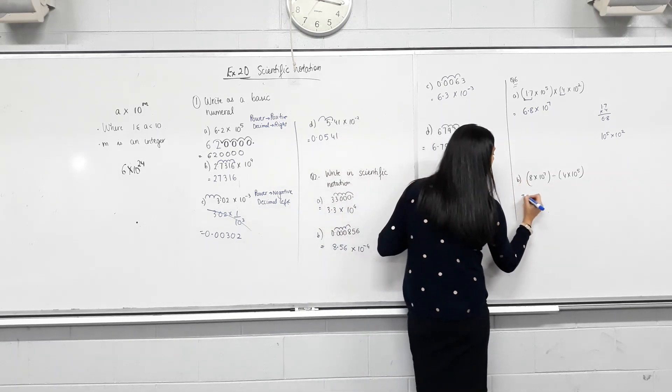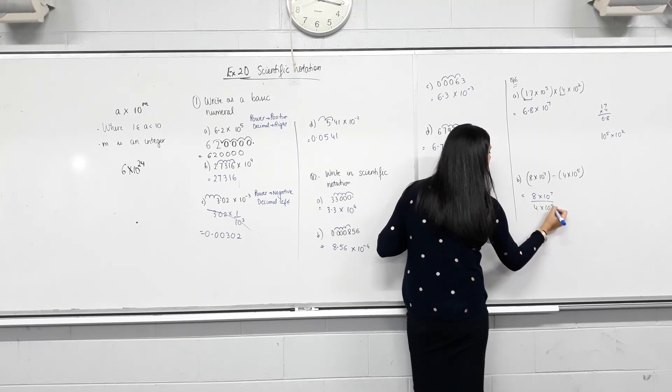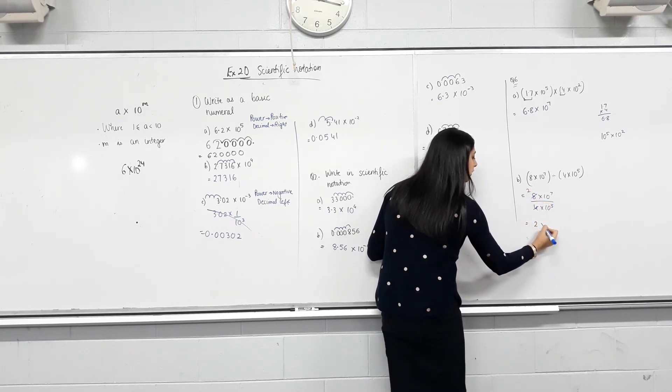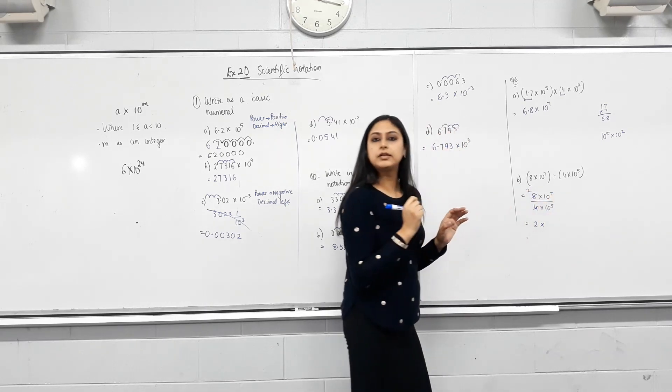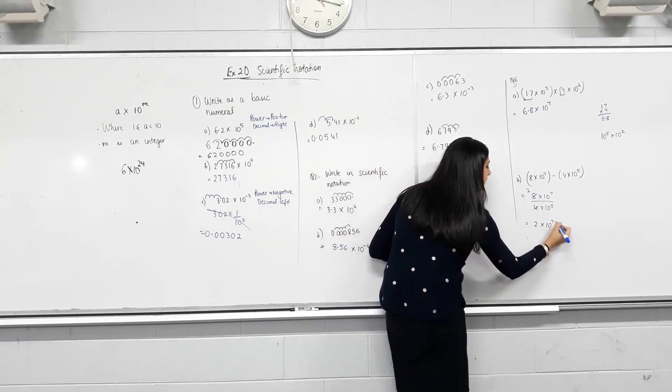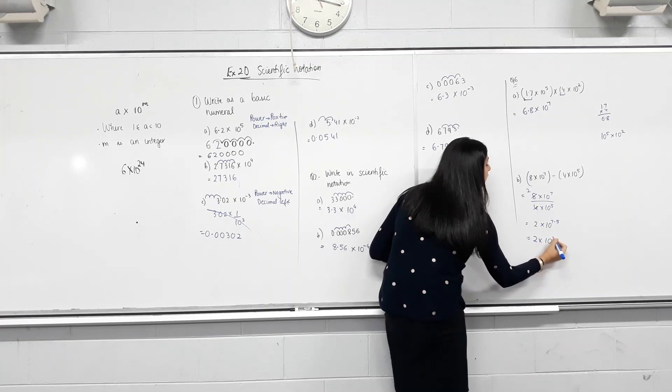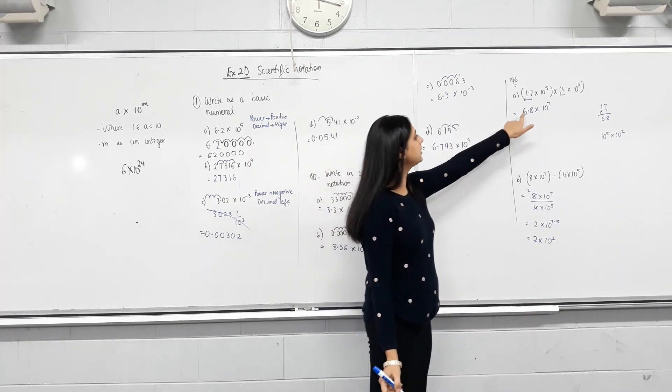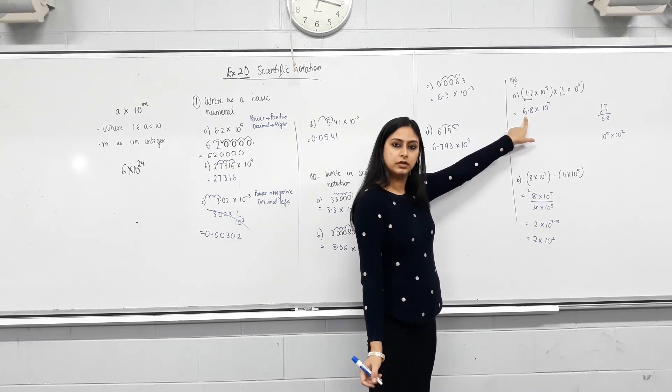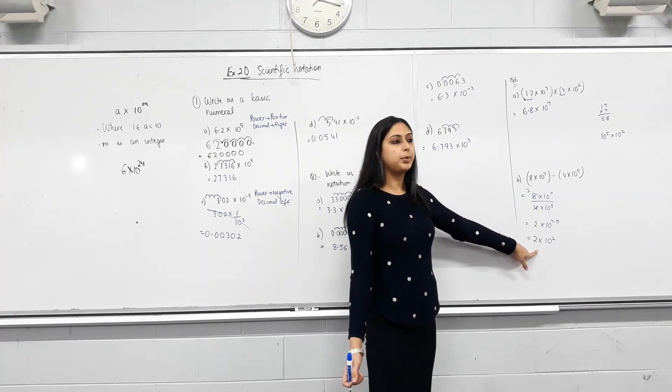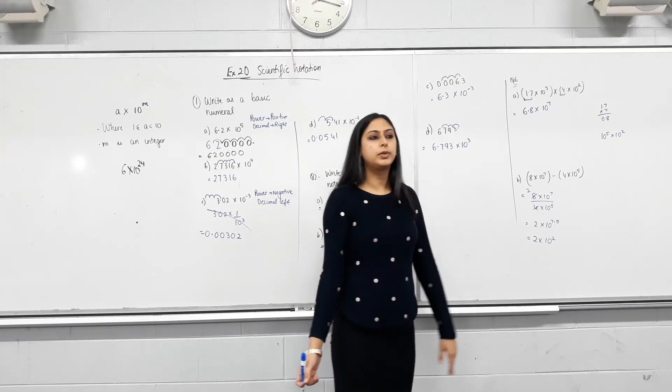Same here with division. I'm going to write this as a fraction. So 8 divided by 4 is 2. Bases are same and they're being divided. What happens to the powers? Subtract it. So 7 take away 5 is 2. That's all. Just check that they are in scientific notation. So we only have one digit before the decimal? Yes. We only have one digit. It's just 2, 2.0. Happy with that? That's all you need to know about scientific notation.